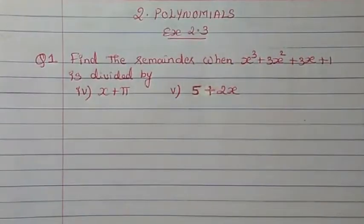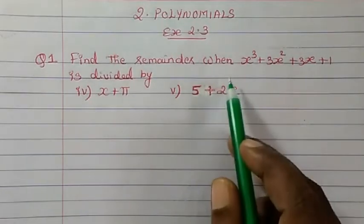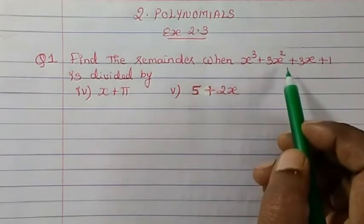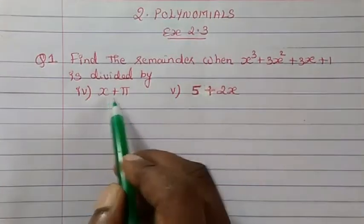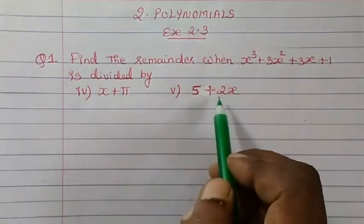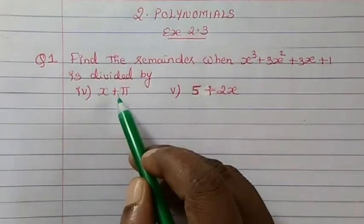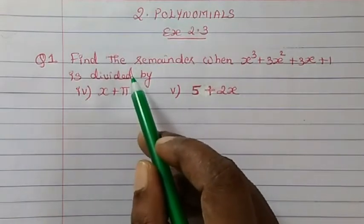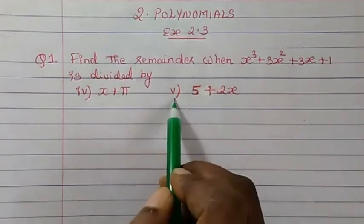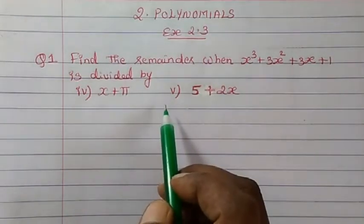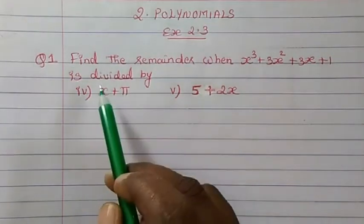Hello students, I am Mary here. Welcome to 9th Maths and CRT Chapter 2 Polynomials. Today we are going to study from Exercise 2.3 question 1: find the remainder when x³ + 3x² + 3x + 1 is divided by 2 linear polynomials given to us. This has 5 parts. Already in the previous video I have done 3 parts. Now the 4th and 5th parts we are doing in this video. So let's continue.